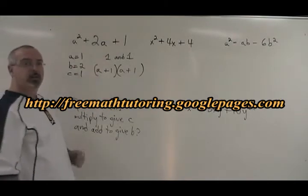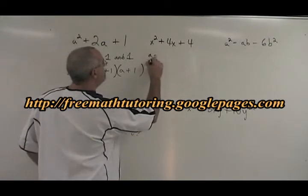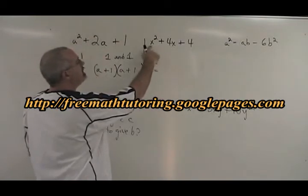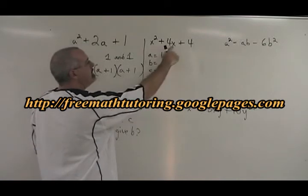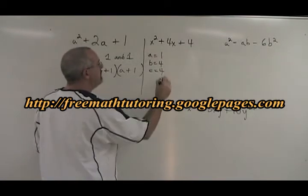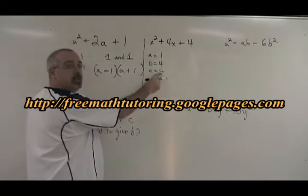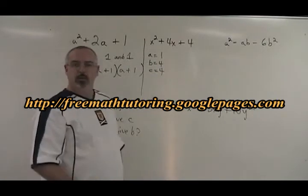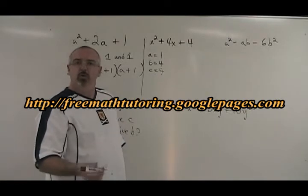Let's try it again on some other examples. In this one, the numerical coefficient of x² is 1. The numerical coefficient of 4x is 4. And the numerical coefficient of 4 is 4. What two numbers multiply to give c? 4. And add to give b? 4. What two numbers multiply to give 4 and add to give 4? 2 and 2.